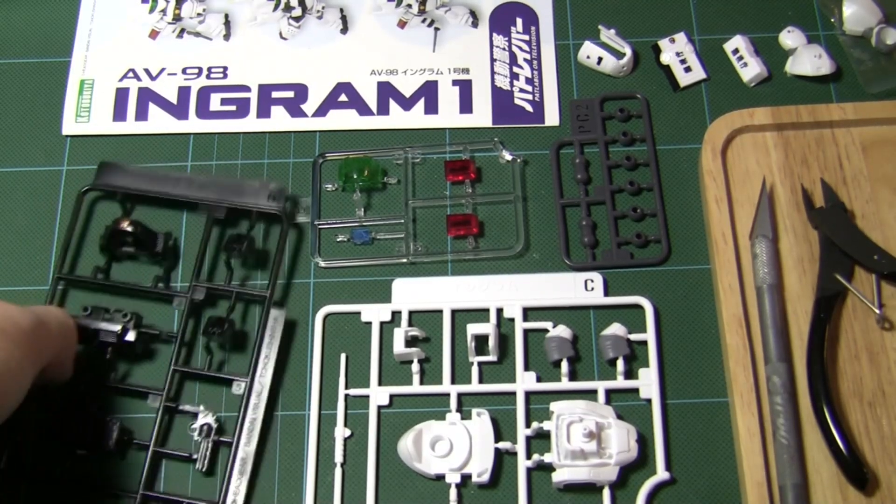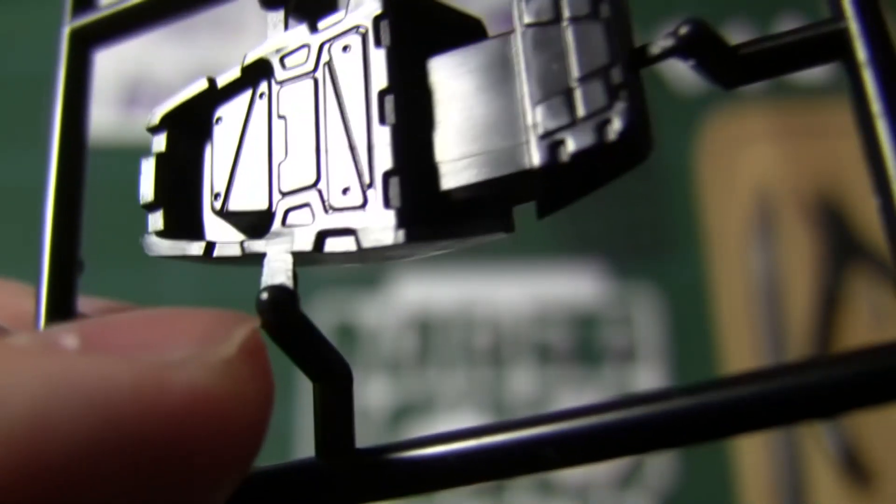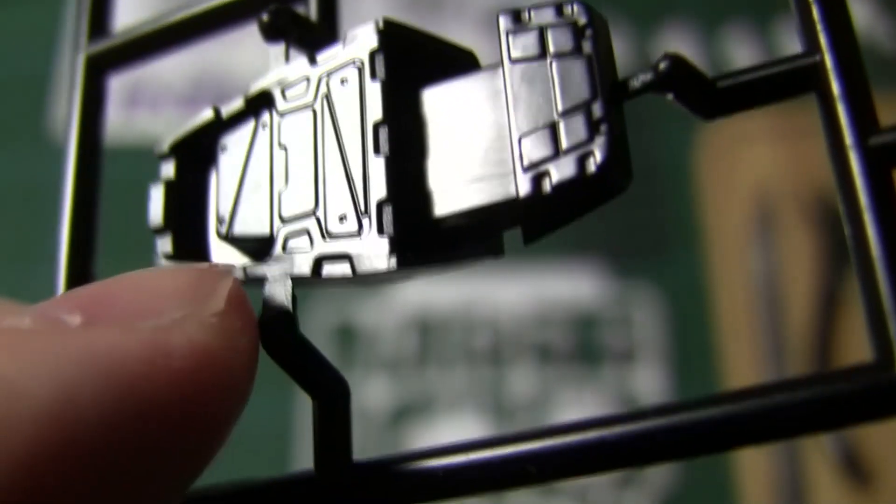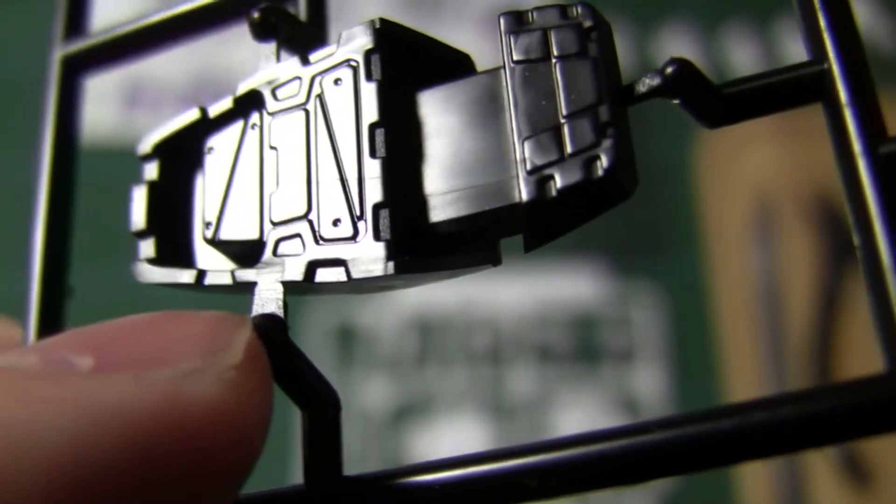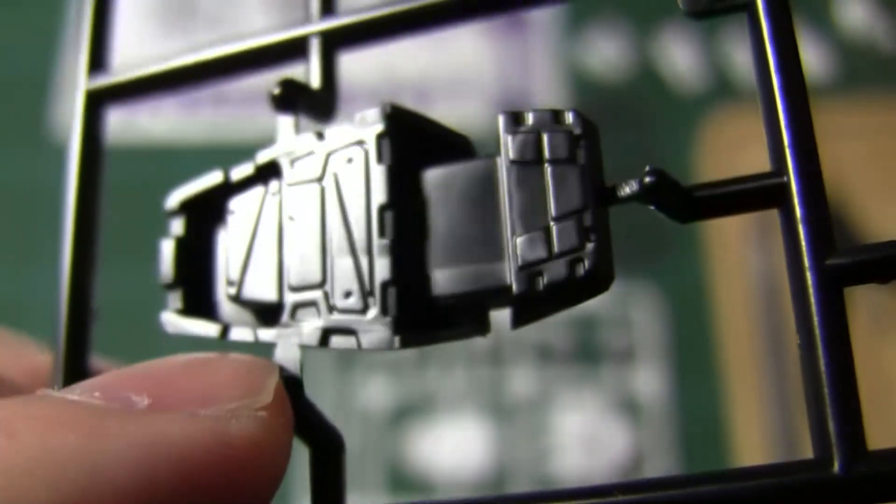One of the first things I noticed, the gate material, the point where the sprue meets the actual part is a traditional type that you get with model kits.